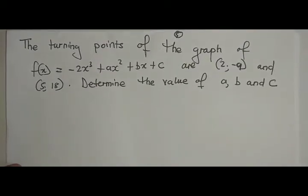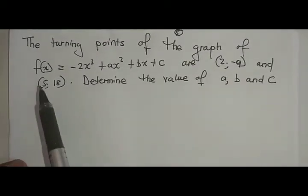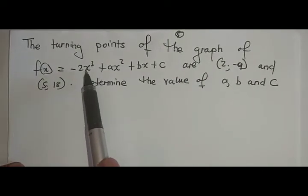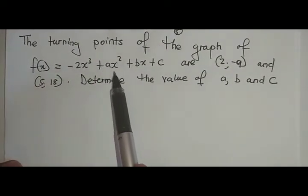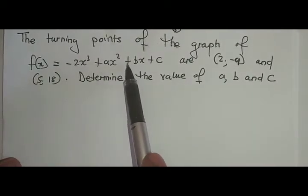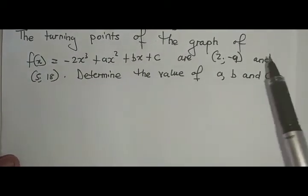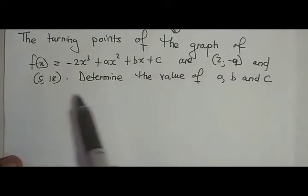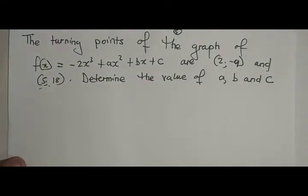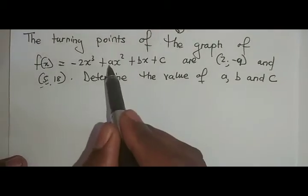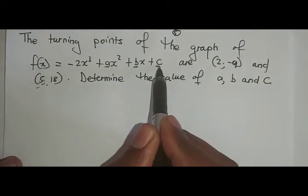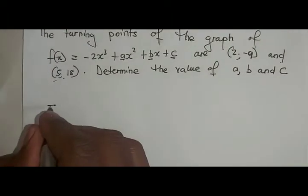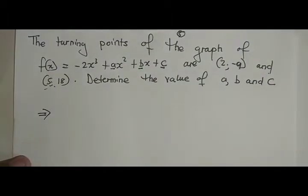On this question, we are given that the turning points of the graph of f(x) = -2x³ + ax² + bx + c are (2, -9) and (5, 18). We need to determine the values of a, b, and c. Since these are turning points, we must differentiate.